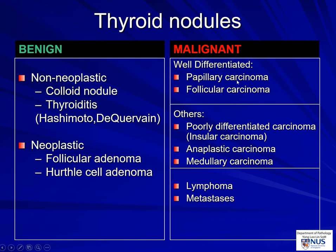Among the malignancies, we have the well-differentiated ones, which include papillary and follicular carcinoma, and the poorly differentiated or insular carcinoma, and anaplastic carcinoma with a very poor prognosis, and medullary carcinoma, which does not arise from the follicular cells but rather the calcitonin-producing parafollicular C cells. And then we have lymphomas and the possibility of metastases.